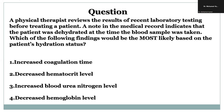Option four is incorrect because hemoglobin is the iron-containing molecule of red blood cells that binds with oxygen. A low hemoglobin level is indicative of anemia and suggests the oxygen-carrying capacity of the blood is decreased. However, hemoglobin may actually be increased in case of dehydration or decreased body water content.